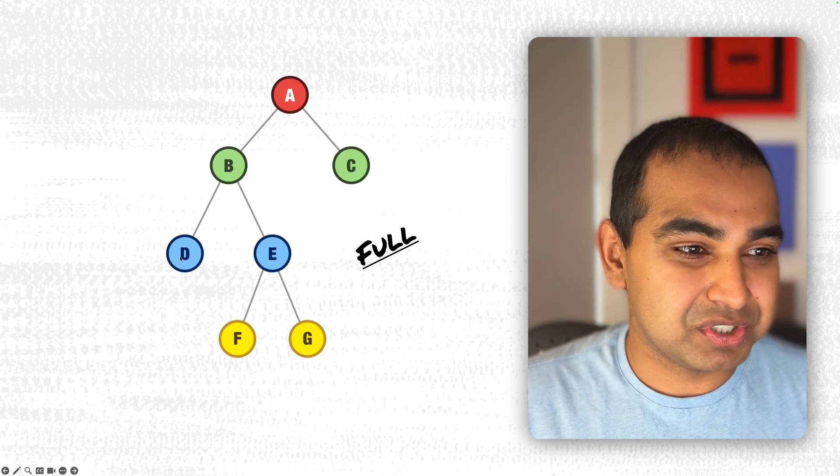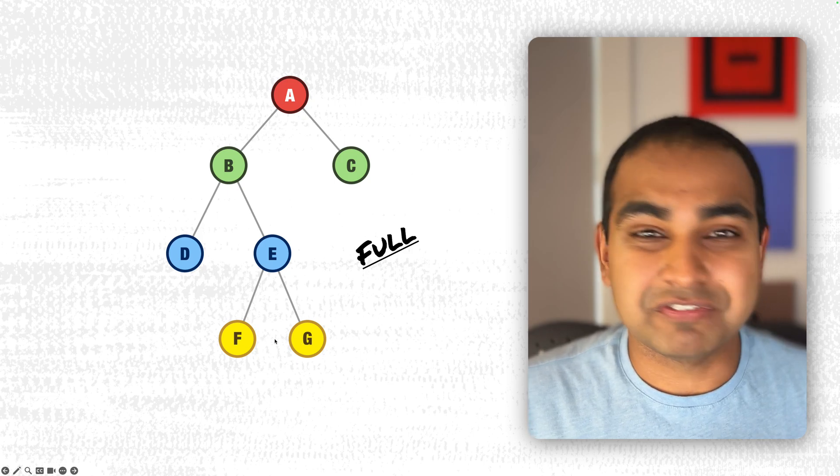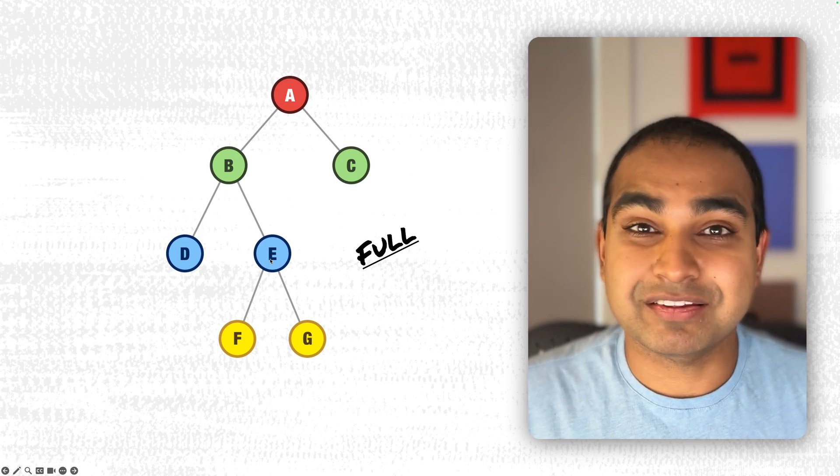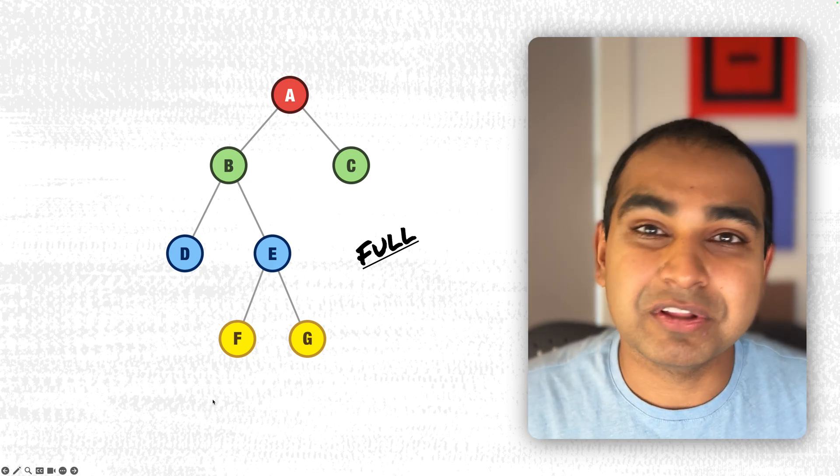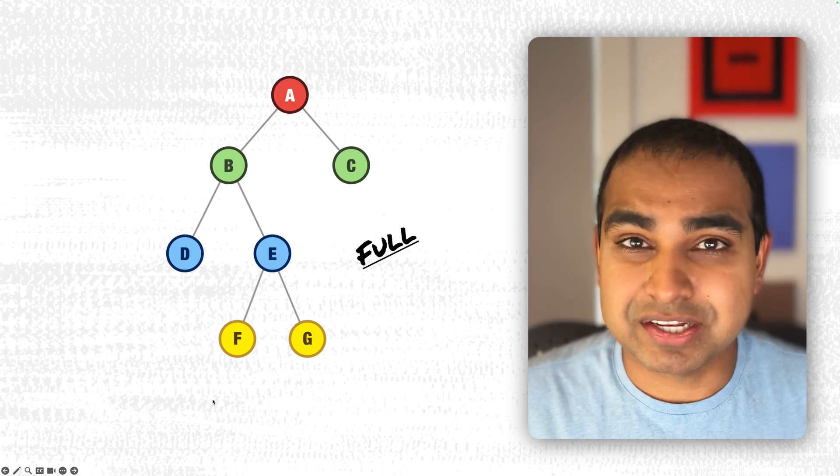B has two children, D and E, and F and G are the children of E by itself. Now if F had just one child, for example, then it would no longer be considered a full binary tree. It would be incomplete in that sense.